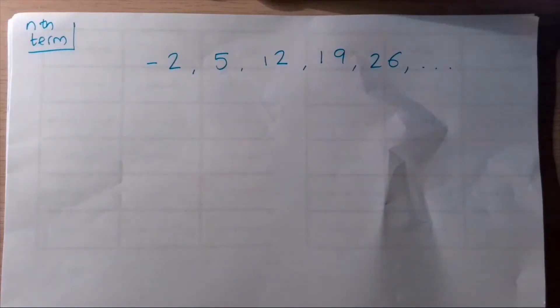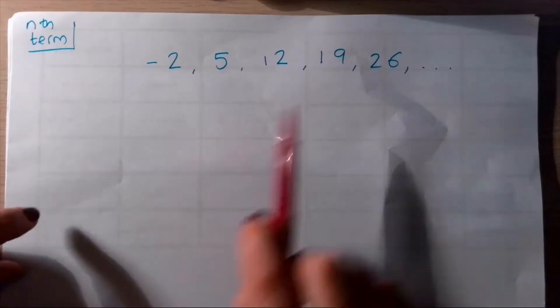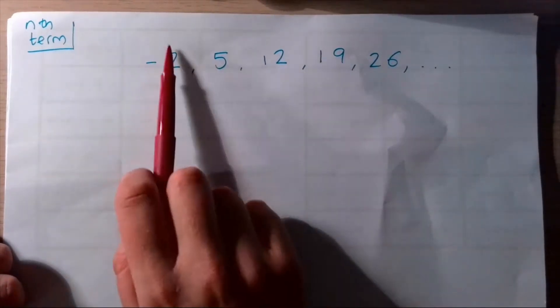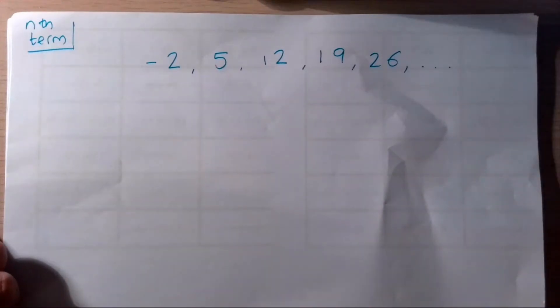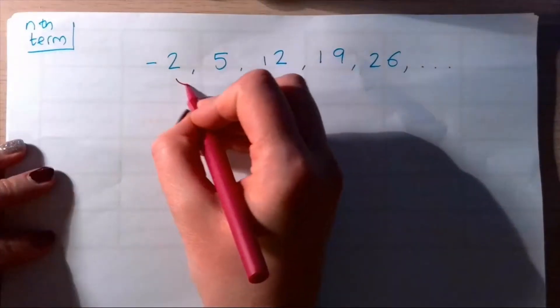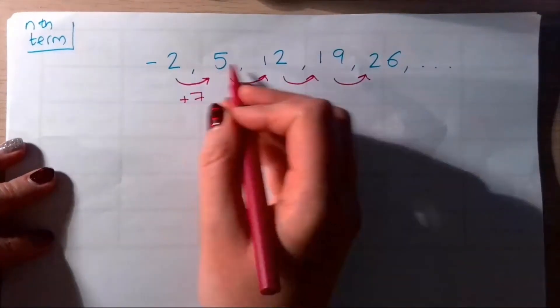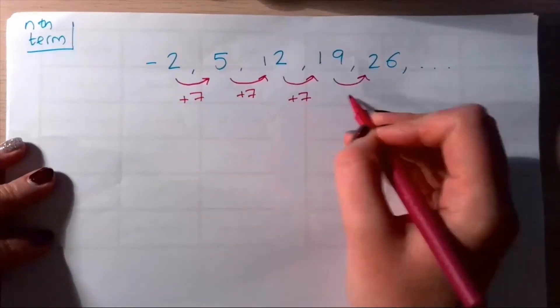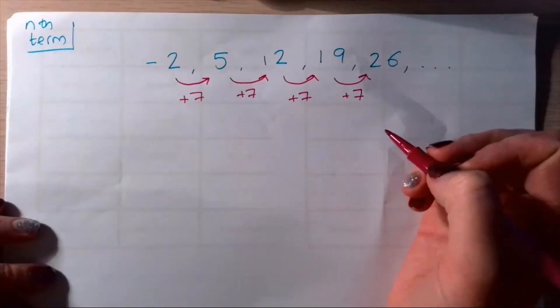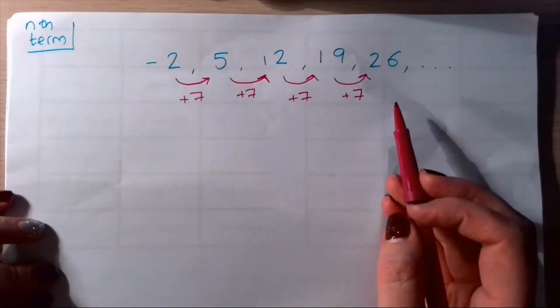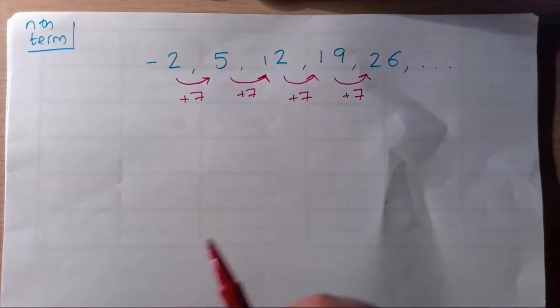We're going to look at calculating the nth term. Remember, that's the little expression that tells us the term of any number. This is our first term, second, third, fourth, fifth. We want to know how to find this number given the position. First thing we do is find our common difference. What are we going up by each time? In this case we're adding seven, so we know it's a linear sequence, sometimes called arithmetic sequences.